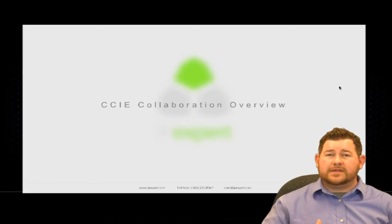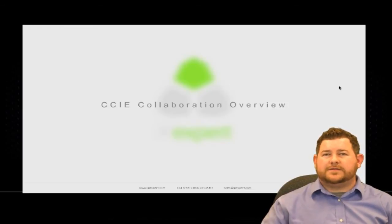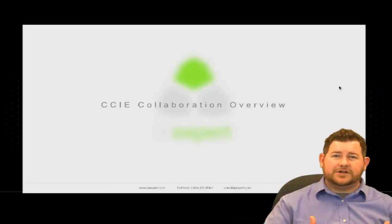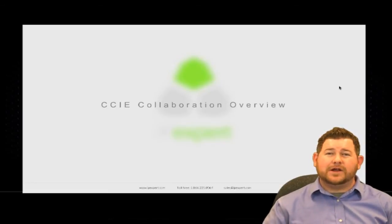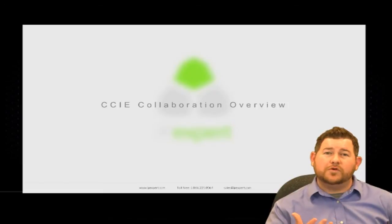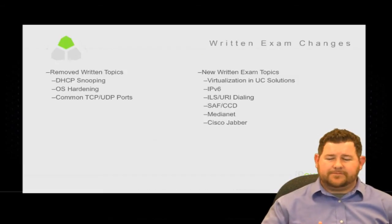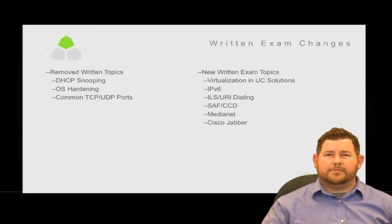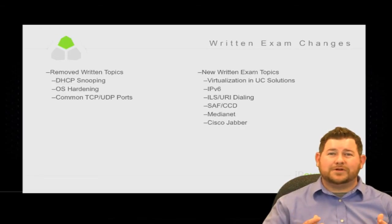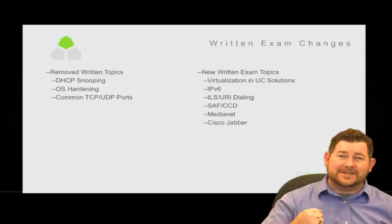For right now, there are a lot of technologies on this exam that are going to be the same. You're going to have some core technologies like call routing that will be exactly the same. Of course, you'll be routing video calls through Communications Manager, which if you were studying for the CCIE Voice you're already familiar with. Now let's talk about the written exam changes. They've removed DHCP snooping, OS hardening, and the common TCP and UDP ports — as if those haven't already been hammered into your brain.